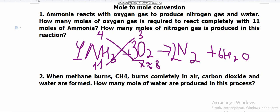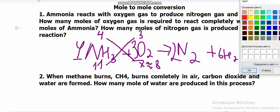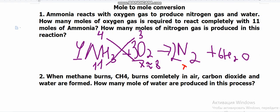Now for the second part: how many moles of nitrogen gas are produced? We place x under nitrogen gas. From the equation, 4 moles of ammonia gives 2 moles of N₂, so 11 moles of ammonia gives x. Cross multiplication: 11 multiplied by 2, divided by 4, equals 5.5 moles of N₂. In both cases, you use the coefficients and do cross multiplication to find your answer.